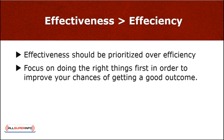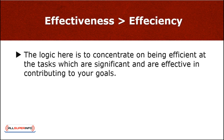In terms of order of importance, effectiveness should be prioritized over efficiency in all of your considerations about productivity. Effectiveness involves the big picture. Putting effectiveness first means that you should first and foremost focus on doing the right things in order to improve your chances of getting a good outcome. Once you get yourself on track and lay out the basics, you can then look into how you can improve the way you do things. The logic here is to concentrate on being efficient at the tasks which are significant and effective in contributing to your goals.